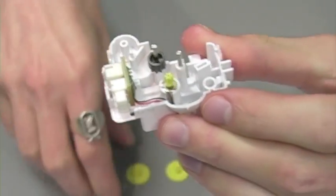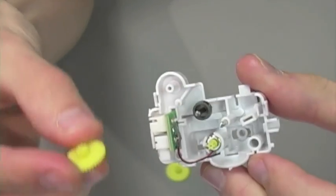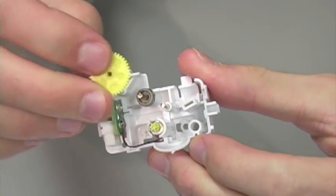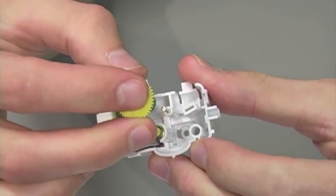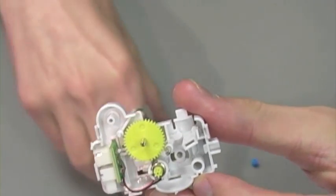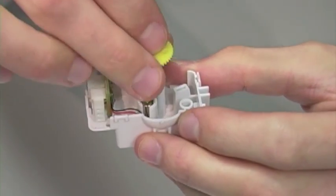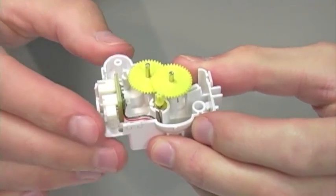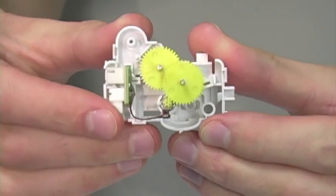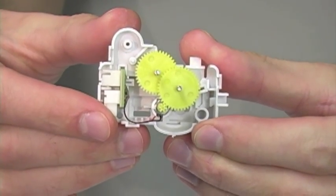Now for step 4 we're going to take our two yellow gears, placing the first on top of part B8 and the second on the remaining shaft. Step 4 complete.